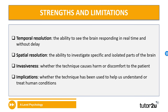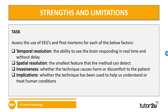Well done if you were able to find any of those. Let's take that one step further. We've been focusing on EEGs and post-mortems, so assess the use of EEGs and post-mortems for each of the four factors. Pause the video for 10 minutes and see if you can comment on each of the four factors for each of the methods of studying the brain.